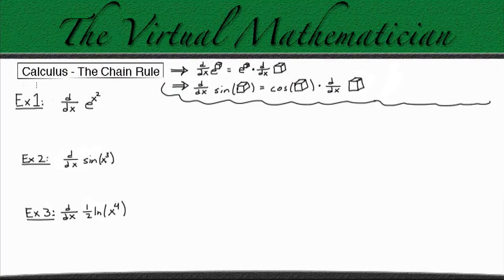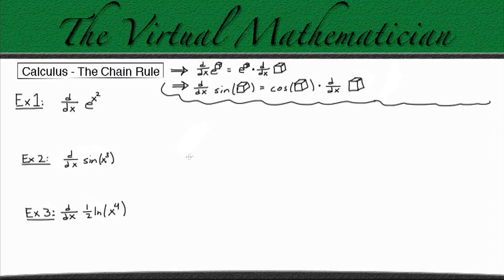Hey everyone, let's talk about the chain rule. The chain rule is something that a lot of people tend to forget in calculus, and it's something we need to use whenever we're taking the derivative of something that has another function inside of it. Some common examples are e to the x, sines, or natural logs. But you could have something like x to the x squared, where x squared is inside because it's raised to the power x squared.